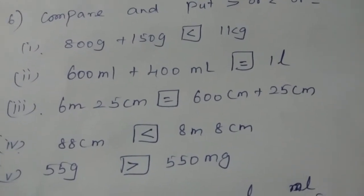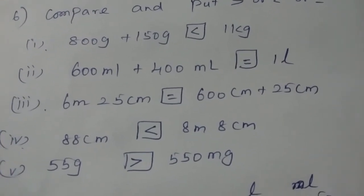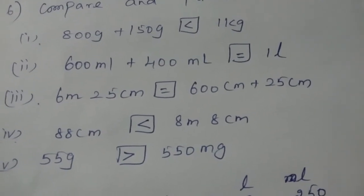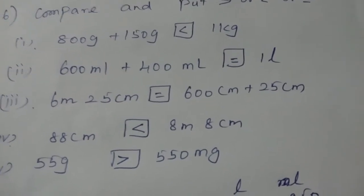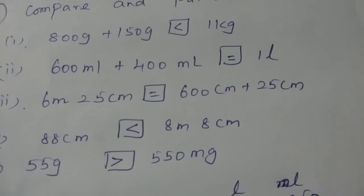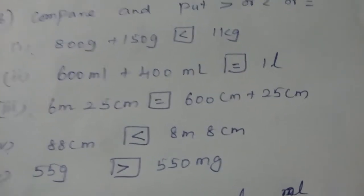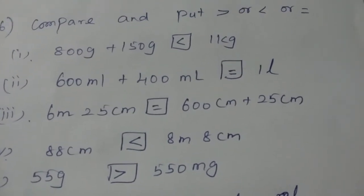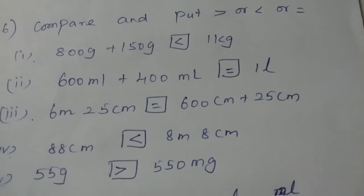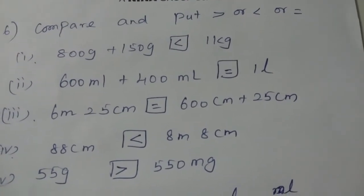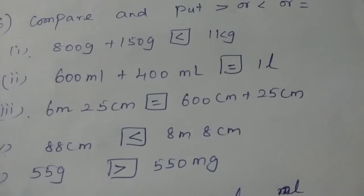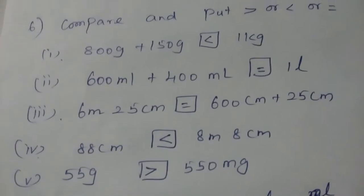The second question is 600 milliliter plus 400 milliliter and in the right hand side is given 1 liter. When you add this, 1000 milliliter equals 1 liter, so it is equal. I have written the symbol of the equal one. The third one is 6 meter 25 centimeter and the right hand side you have 600 centimeter plus 25 centimeter. If you add both values you will be getting the same because 625 can be written as 6 meter and 25 centimeter.